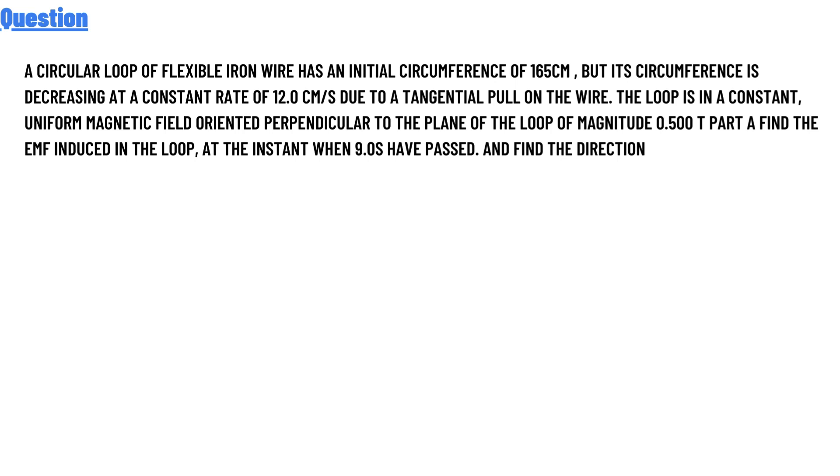The loop is in a constant uniform magnetic field oriented perpendicular to the plane of the loop of magnitude 0.503 T. Part A finds the EMF induced in the loop at the instant when 9.0 s have passed, and find the direction.